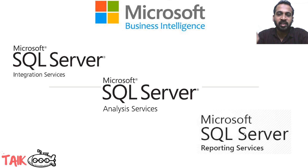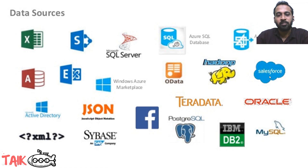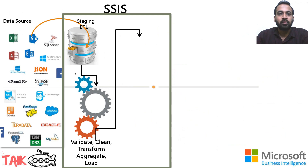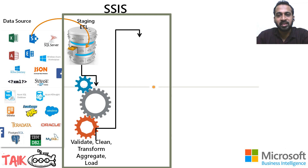Let's go into a little more detail about what it is and how it actually works. These are the data sources — for example, Excel, Access, Exchange, SharePoint, SQL Server, Facebook, Teradata, IBM, MySQL, Oracle, Salesforce, and many more. These are what we call data sources. Then the first stage is SSIS — SQL Server Integration Services — where we collect all the data sources' information and begin staging it.